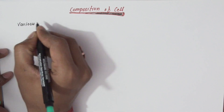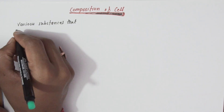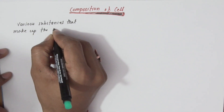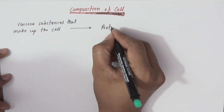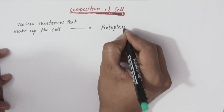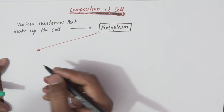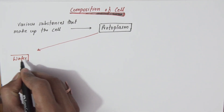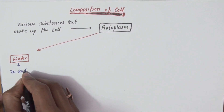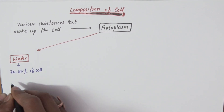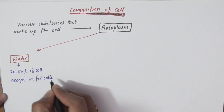The various substances that make up the cell are collectively called protoplasm. This protoplasm is composed of water, which accounts for 70 to 80 percent, except in fat cells.